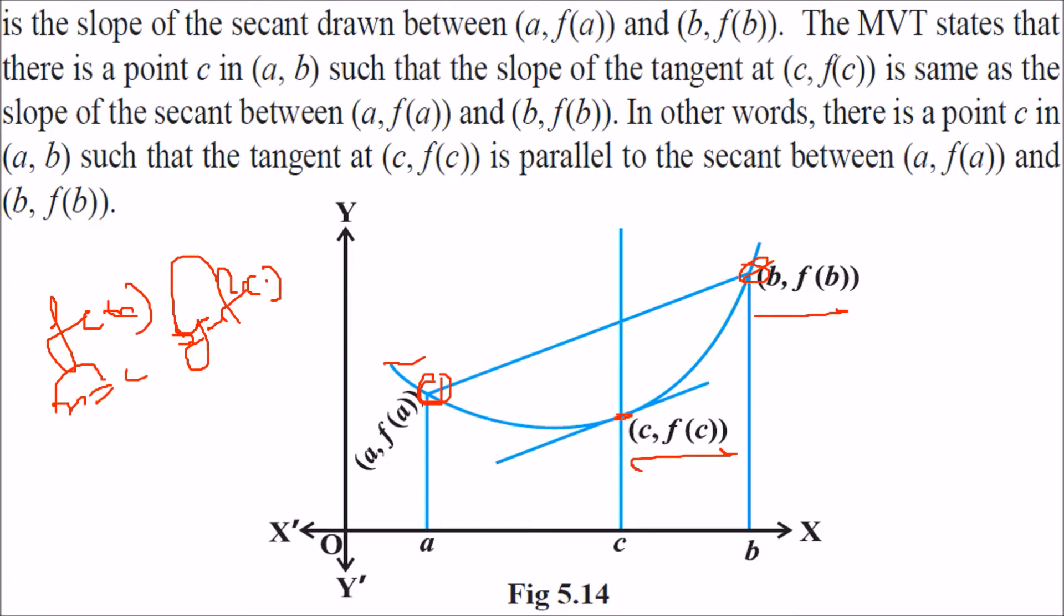But what we are saying here is, in between these, there is a point c such that the f dash c, that is the slope of this. And what is the slope of this? We have just known m is the slope. The slope is the gradient. This is all slope, gradient. And this is nothing but the slope of this line because these two are parallel.